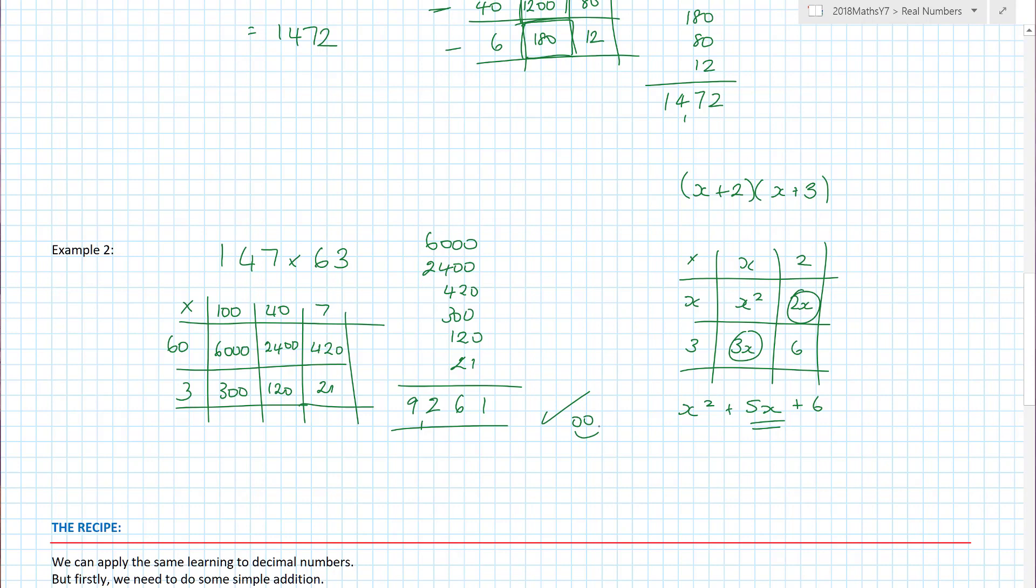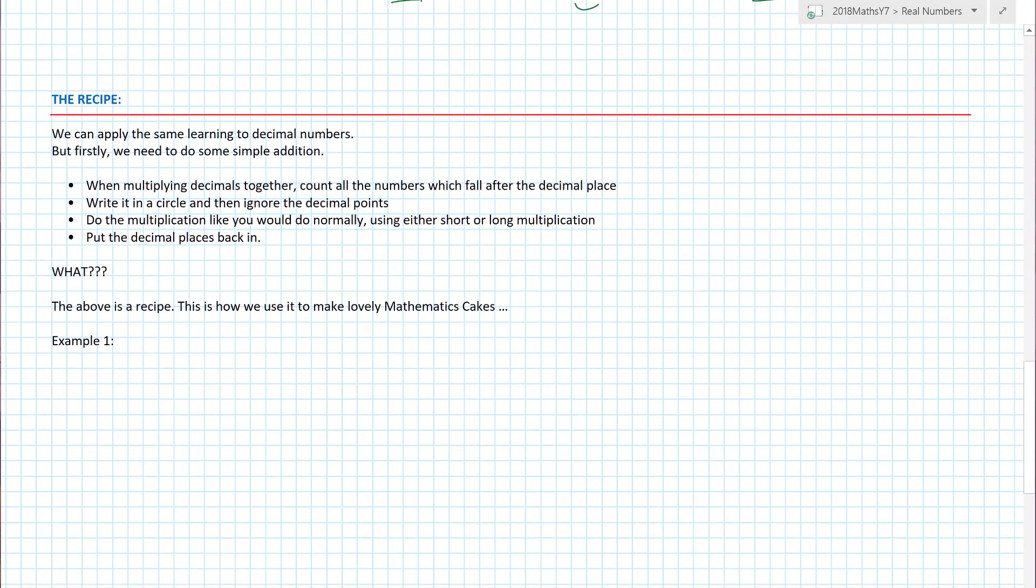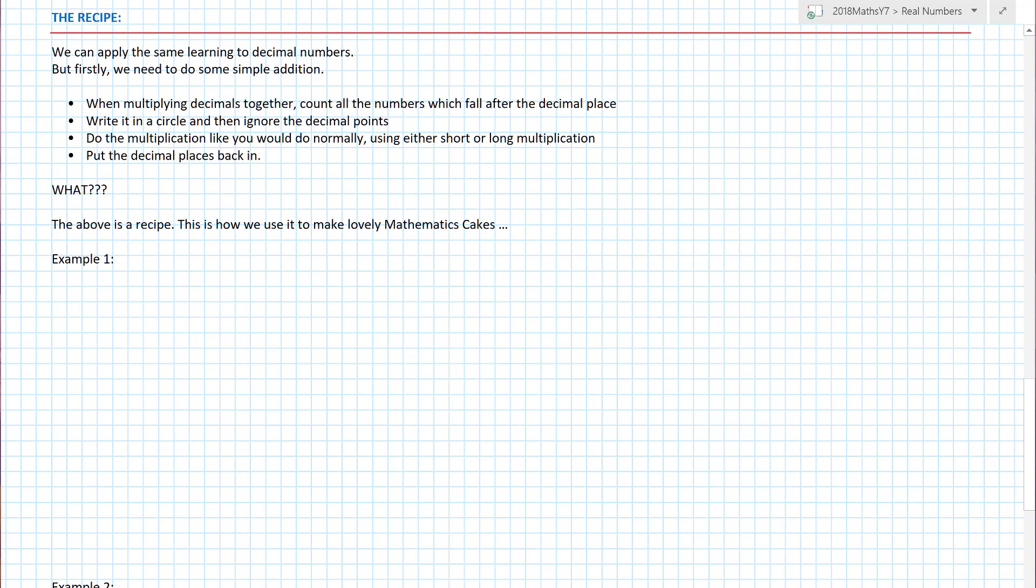There is actually another way of doing it called the Chinese method, I think. And you draw lines and you count dots. It's phenomenal, but I've never remembered it. So it can't be that easy. Now, we can actually apply the same learning to decimal numbers. But firstly, we have to do some simple addition.